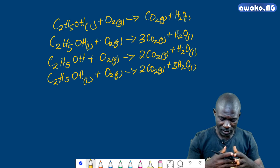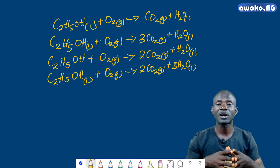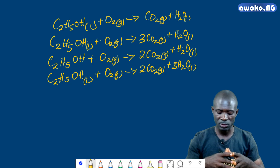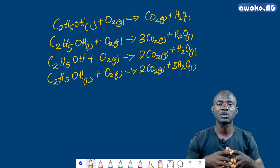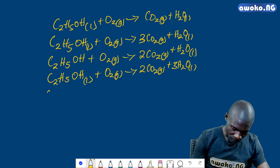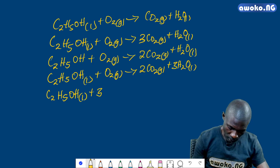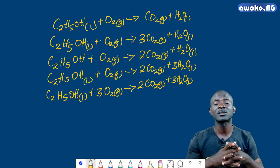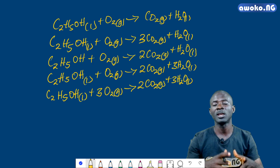Carbon is already balanced, hydrogen is already balanced. What remains is oxygen. On my right-hand side I have seven atoms of oxygen, while on my left-hand side I have three atoms. Introducing three moles of O2 on the left-hand side balances the oxygen to seven. This gives the final equation: C2H5OH (liquid) plus 3O2 (gas) = 2CO2 (gas) plus 3H2O. This is the balanced chemical equation for the combustion of ethanol in oxygen.